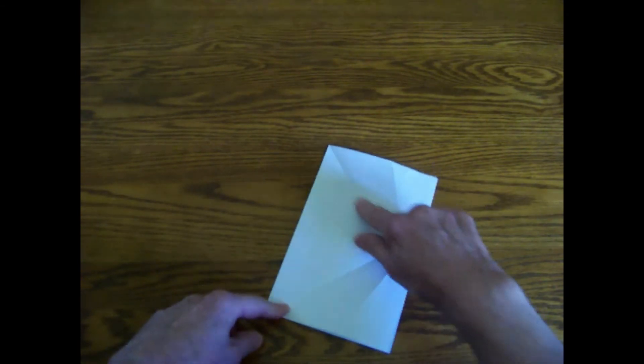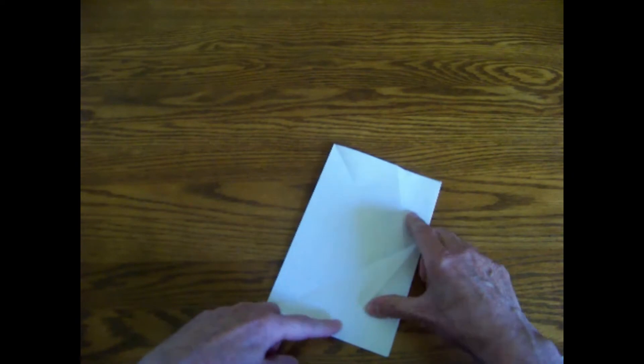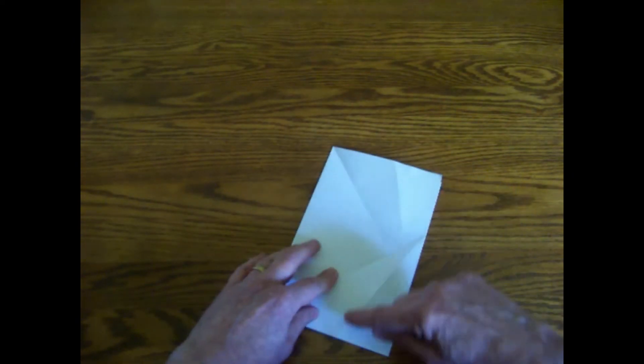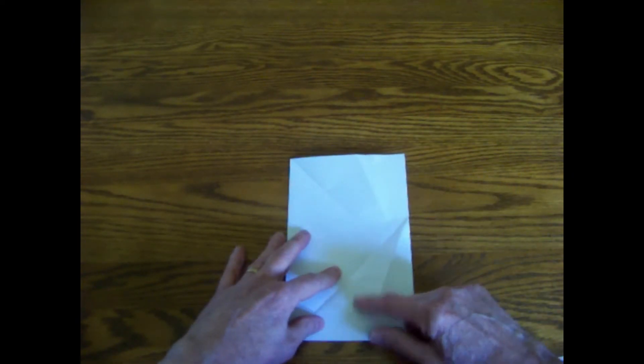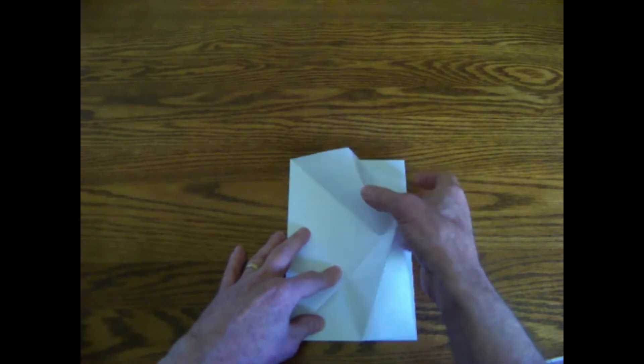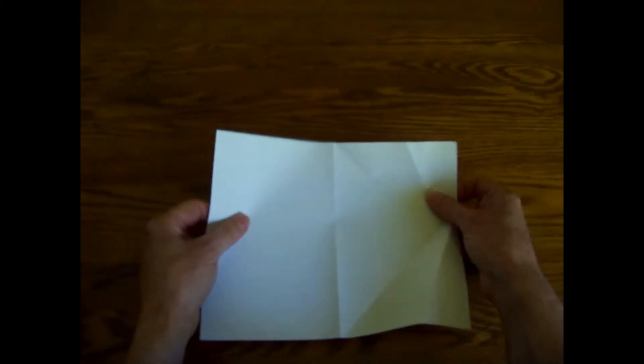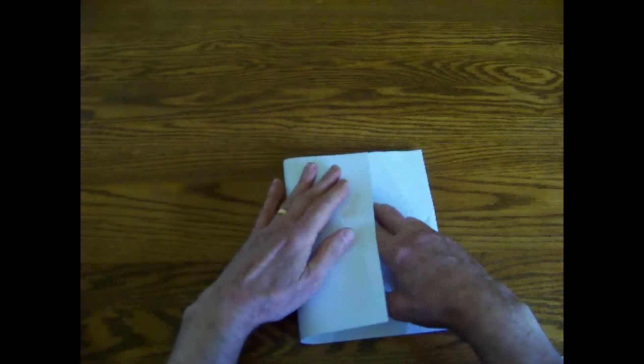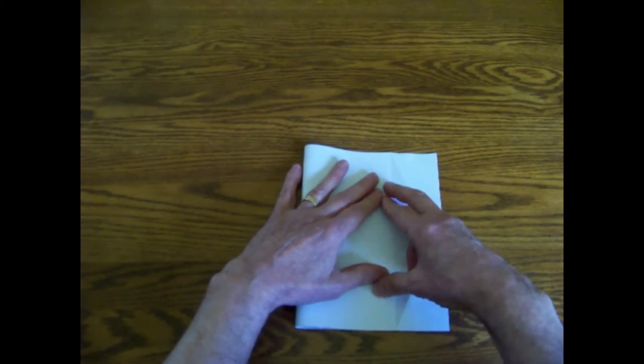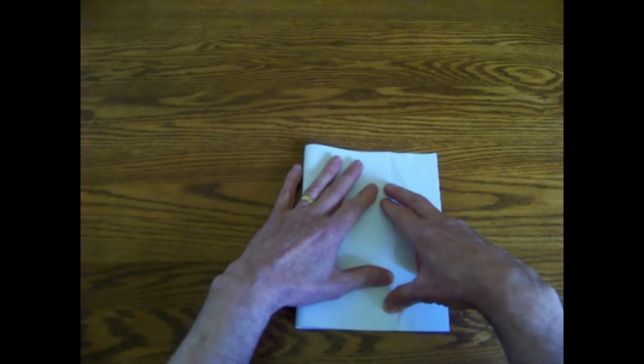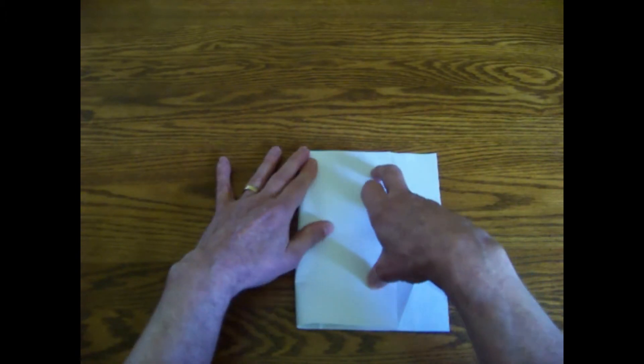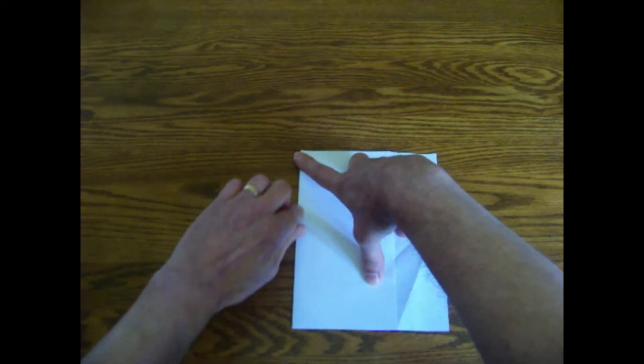Notice how we've got rays coming out from the center. Notice particularly this point and this point. This actually divides the edge into fifths. There's one fifth of the sheet of paper from there to there. If I fold up to meet that line, I fold it over two fifths.